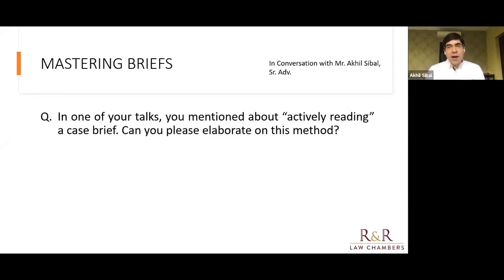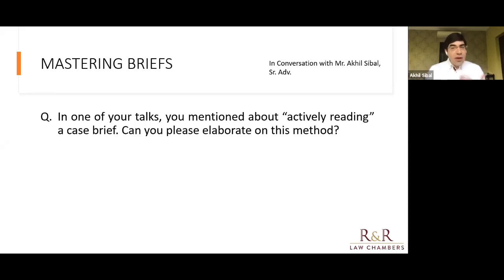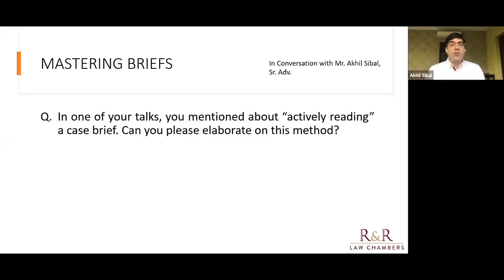To sum up: it's important to formulate a critical angle as you read. Think about what facts you hope to find in order to make a particular argument, and then see if those facts emerge as you read. Think about the argument you could make even before you've read all the facts. As you read and discover the facts, you'll modify and adjust your argument to fit. At the end of it, you're likely to have a far more precise and well-formulated argument compared to if you sat down, read everything, and then started thinking about what arguments might work.